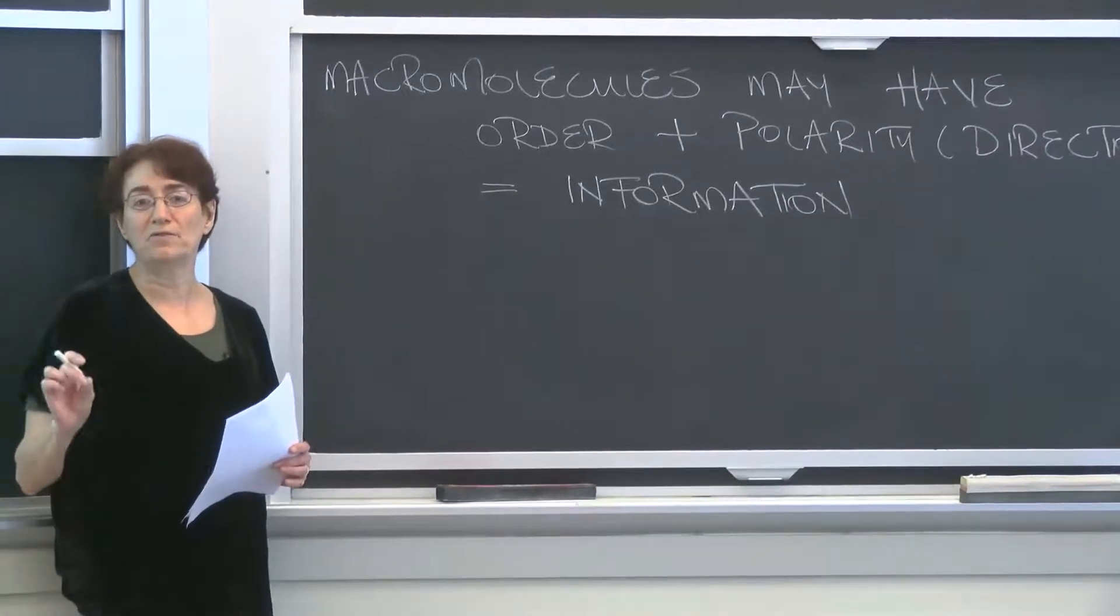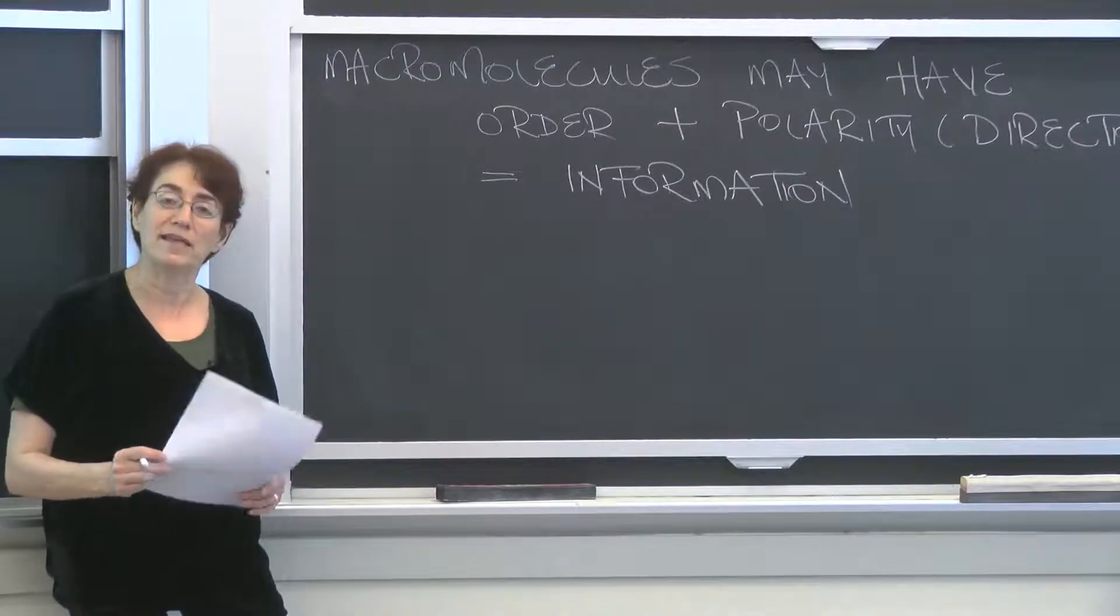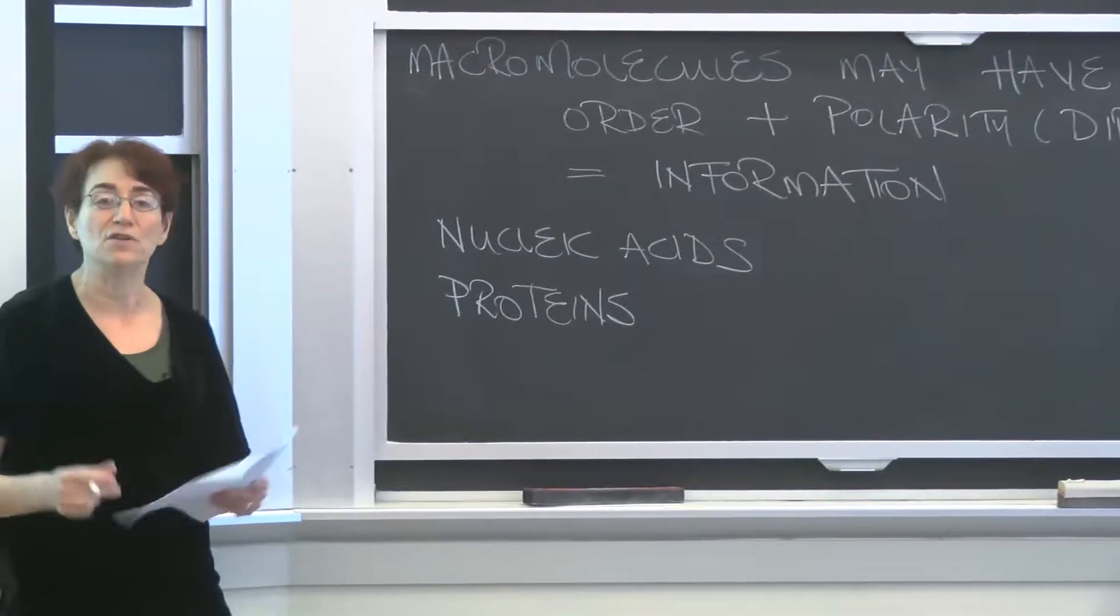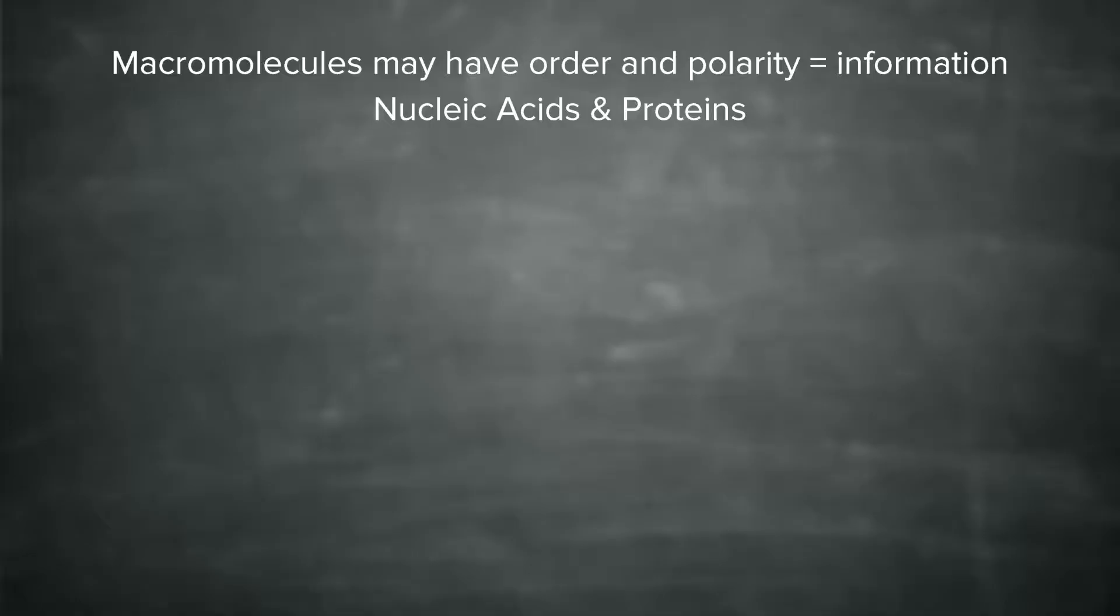The two classes of macromolecules that do this par excellence are the nucleic acids and the proteins. And so we're going to talk about both of those, nucleic acids and proteins. The nucleic acids, as I said, carry the information of hereditary. The proteins carry the information of just about everything else. So these two classes are what we'll discuss over the next few minutes.